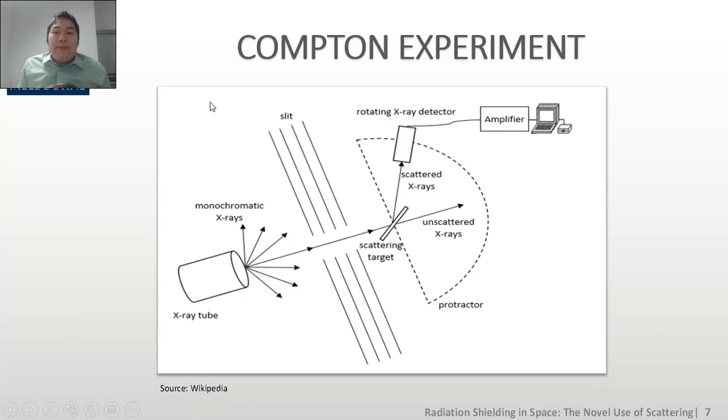Now that we have identified Compton scattering as the scattering phenomenon that we want to use in this research, we will have to base our calculation on the Compton experiment. In this setup, monochromatic X-rays are being fired from an X-ray tube with an incident energy of 200 kilo electron volts, and the scattered photons have their energy and angle measured using an X-ray detector mounted on a protractor.